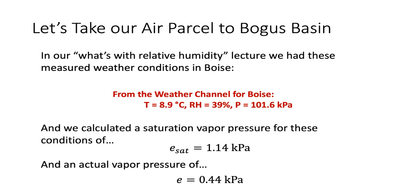In our last lecture, we investigated a little air parcel in Boise. We had that lecture about how relative humidity can be a little bit misleading because it doesn't tell us everything we would like to know about an air parcel. We started off with some known and measured characteristics: the air temperature was about 8.9 degrees Celsius — about 48 degrees Fahrenheit — on February 1st. The relative humidity was 39%, and the air pressure was about 101.6 kilopascals.